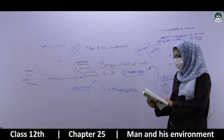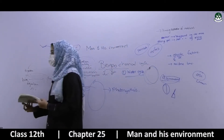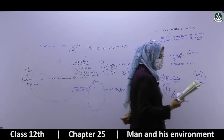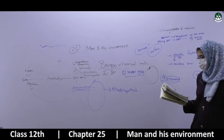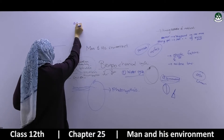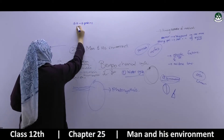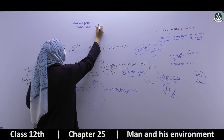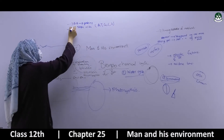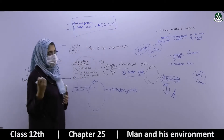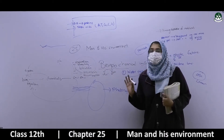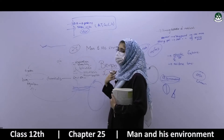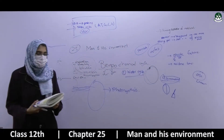Now we discuss the nitrogen cycle — how nitrogen is distributed, broken down, and returned to the environment. Nitrogen is a necessary element of organic molecules such as amino acids, nucleic acids and proteins. Proteins make up nails, hair, skin, hormones, and enzymes. Chromosomes are 60% protein (histone protein) and 40% nucleic acids — DNA and RNA. Therefore nitrogen is highly important.